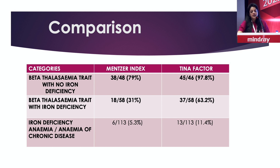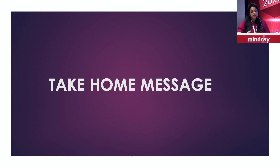Reticulocyte hemoglobin has a lot of potential and we can extract more by doing prospective studies. It is a very useful parameter for even predicting that a patient is a thalassemia trait. My take-home message: please apply the TINA factor, do a prospective study, give me feedback, and then we can publish a lot more.